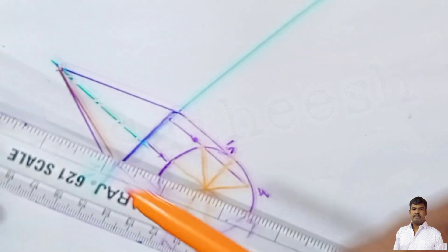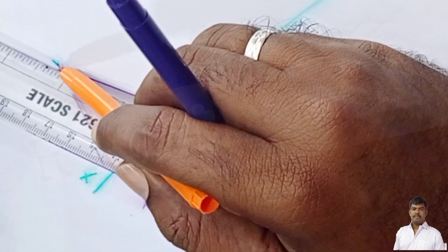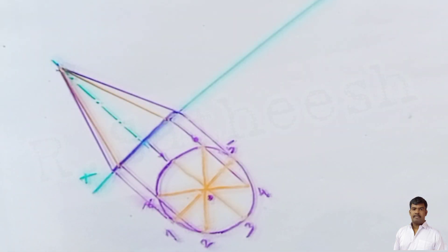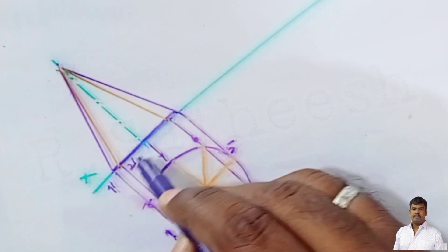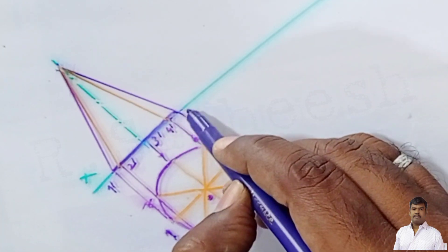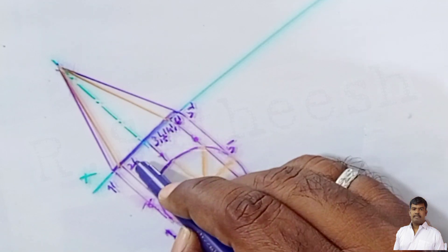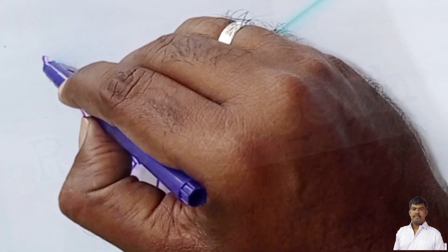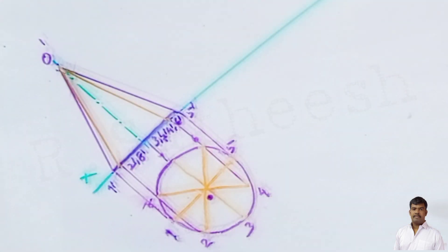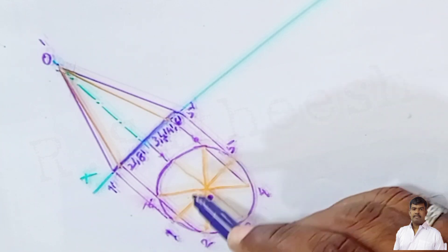Draw with a 2H pencil. Assign numbers: 1, 2, 3, 4, 5, 6 in the front view. Similarly, the dashed counterparts are 1', 2', 3', 4', 5', 4' and 6', 3' and 7', 2' and 8', and the center O, which is the apex, is labeled as O'.